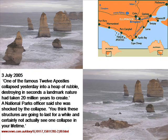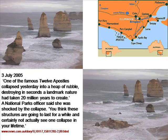Landscapes and features such as the Twelve Apostles in Australia are being destroyed and changed before our eyes. Erosion happens quickly, especially along coastlines. The parks officer is amazed that she has been alive to see something collapse that has been around for twenty million years. However, if she had a biblical worldview about the Genesis flood and the age of the earth, she would find it a lot less mysterious.